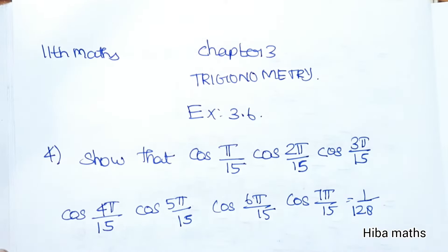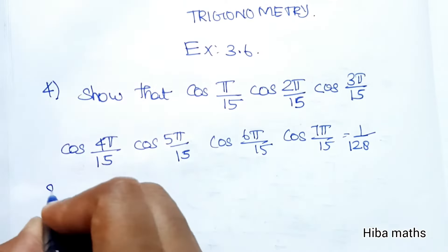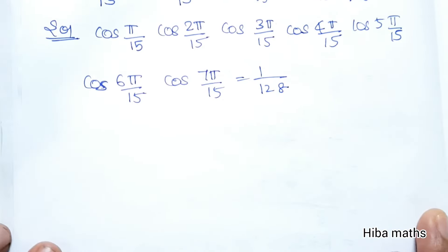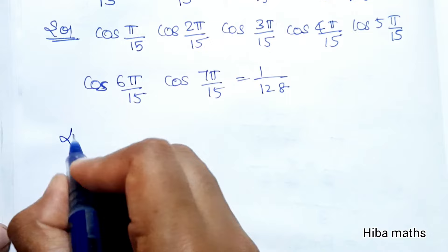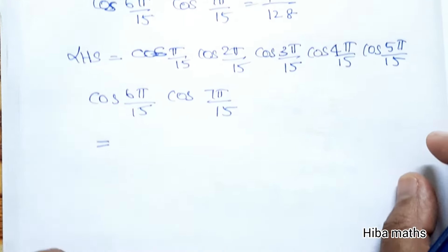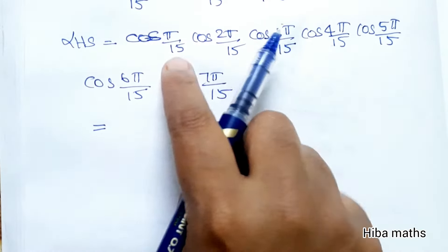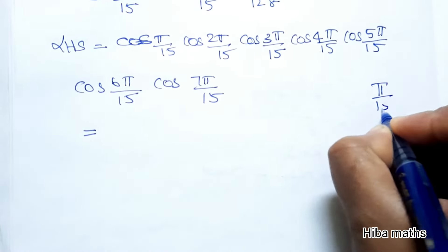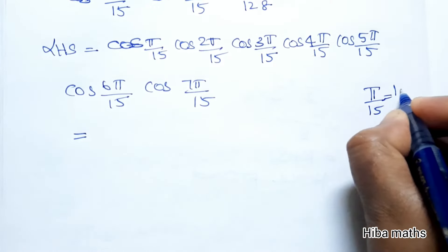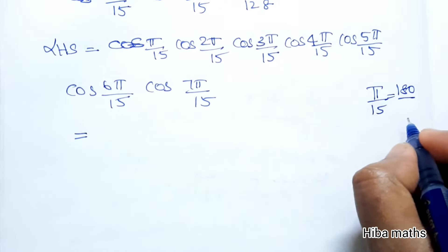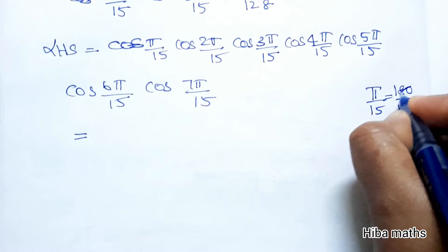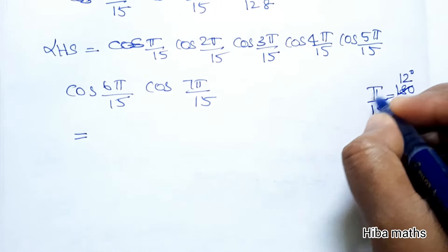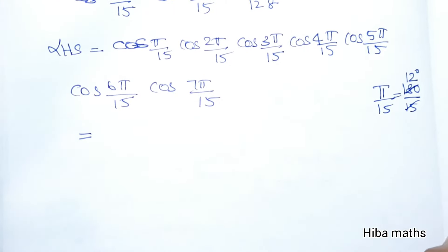For the proof, we'll take the LHS and show it equals the RHS. Starting with the LHS, we have cos(π/15) through cos(7π/15). Since π/15 equals 180°/15, which is 12°, we can rewrite each term. So π/15 is 12°.